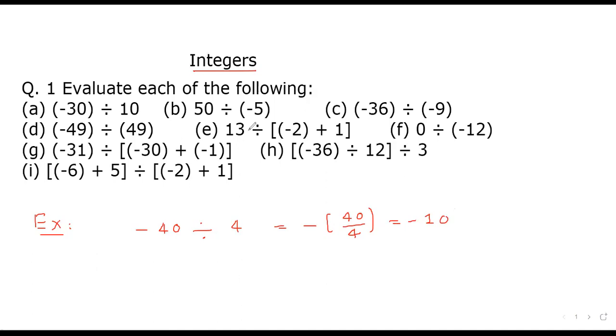Similarly, suppose we have minus 36 divided by minus 6. Since both are negative, the minus sign will cancel out, or we can write minus 36 divided by minus 6. These minus minus will become plus, so the answer will be 6.